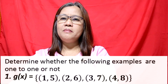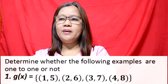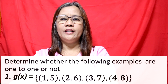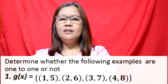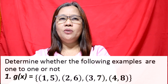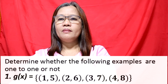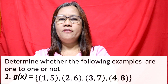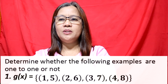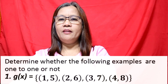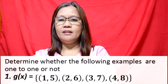Now let's try to determine whether the following examples are one-to-one or not. For number one, we have g of x is equal to the set of ordered pairs: (1, 5), (2, 6), (3, 7), and (4, 8).